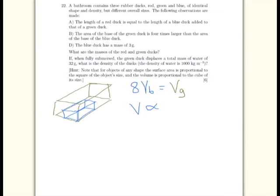Since the density of these ducks is all constant, we can say that the mass is directly proportional to the volume. Therefore, the mass of the green duck is eight times the mass of the blue duck. So that's 24 grams.